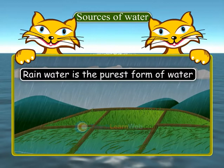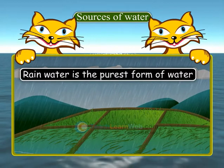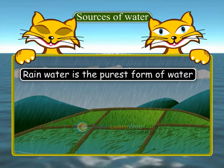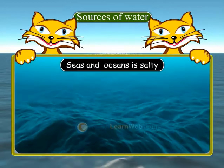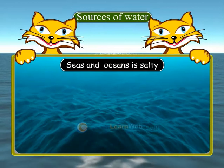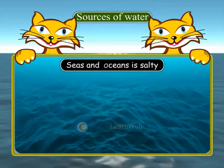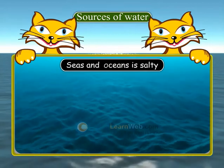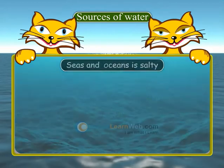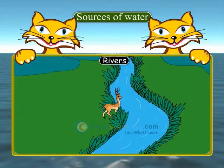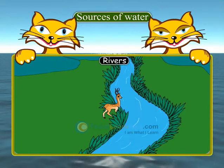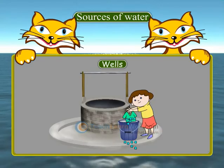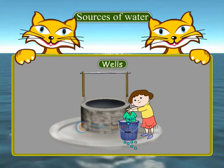Rainwater is the purest form of water. The water in seas and oceans is salty. So, we all depend on rivers and wells for our requirements.